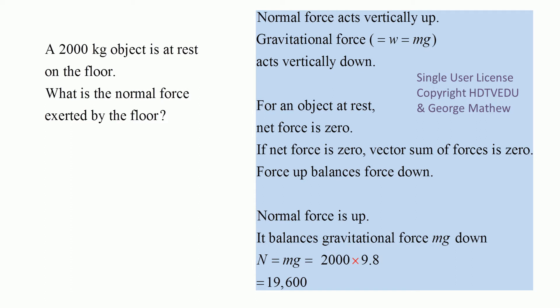A 2000 kg object is at rest on the floor — what is the normal force exerted by the floor? Normal force acts vertically up and gravitational force acts vertically down. For an object at rest, net force is zero. If net force is zero, the vector sum of forces is zero, meaning force up balances force down.